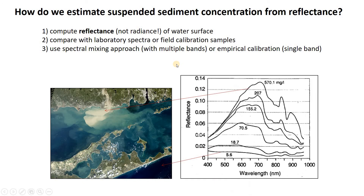So how might we do this with satellite imagery? We take an image, make sure that we're in units of reflectance and not radiance — see previous videos for that explanation. Then we take measurements of the reflectance spectra from different pixels in our satellite image and compare them with laboratory spectra or with field calibration samples, where someone goes out and collects suspended sediment samples at the same time the image is being captured. We can then use spectral mixing, if we want to involve all spectral bands, or empirical calibrations if we're just using a single band.